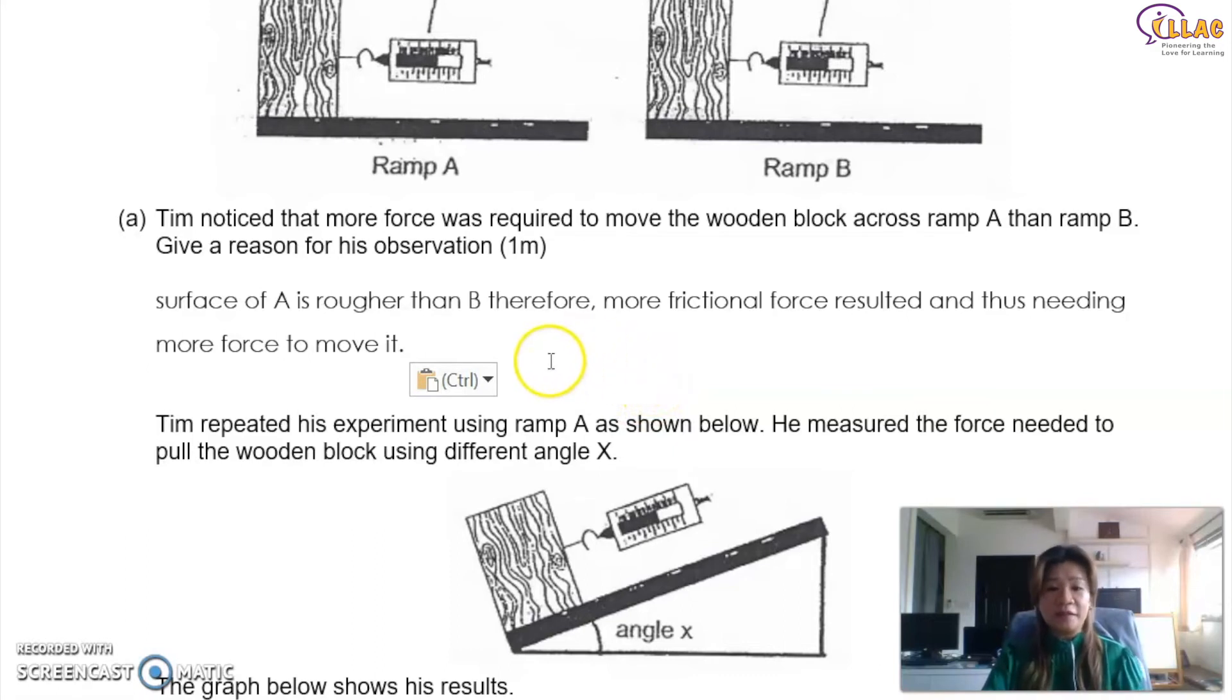Therefore, your answer could be something like this. Surface A is rougher than B. Therefore, more friction of force resulted and thus needing more force to move it. So what are the keywords over here? You will have to say that surface A is rougher. So why do you need to say that? Because that is the main difference. Why? Both experiment that looks exactly the same thing, using the same material. A is actually needing more force to pull. That's exactly because surface A must be rougher. Because remember, when we learn frictional force, the rougher the surface, the more force you need. Therefore, more frictional force required. It is required to move it. So this is the two keywords that you will need for this question.